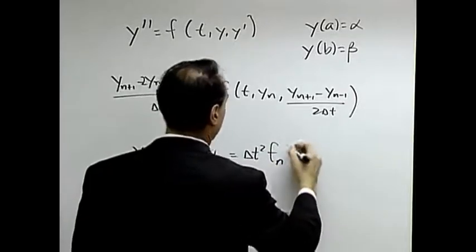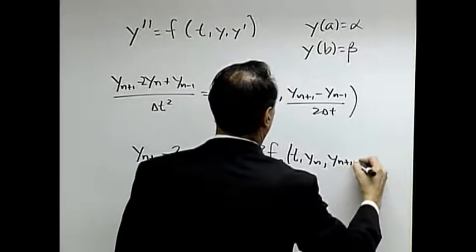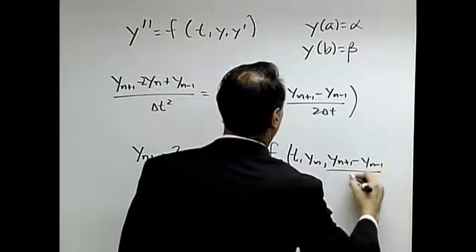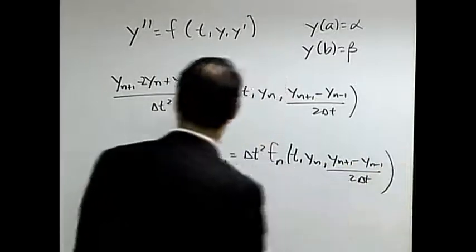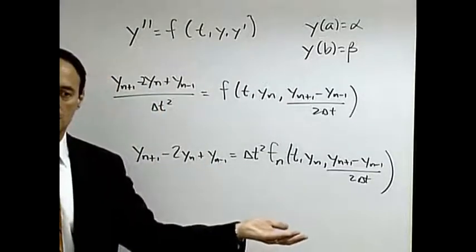Let's call this f of n, because that's where I'm evaluating it. And so what I'm going to get is a big nonlinear system of equations.